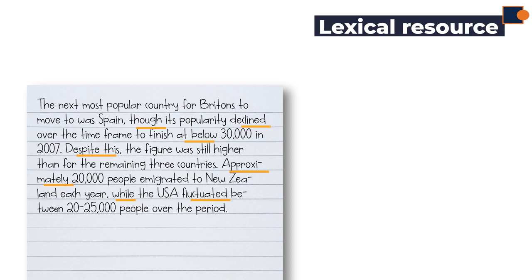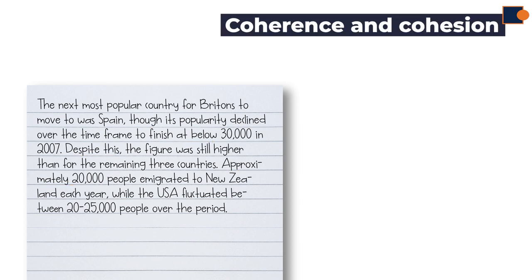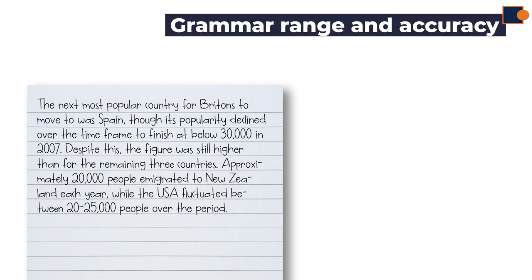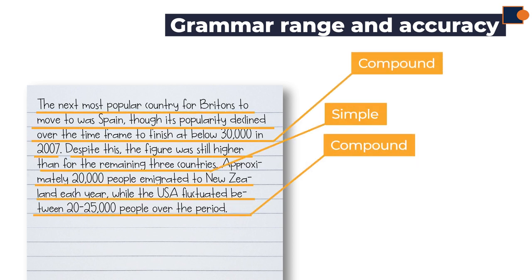The coherence and cohesion criteria is met by using comparative language and concession conjunctions such as though, despite this, and while. When it comes to grammar range and accuracy, again we can see different combinations of complex and simple sentences.